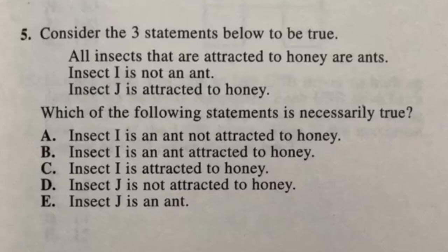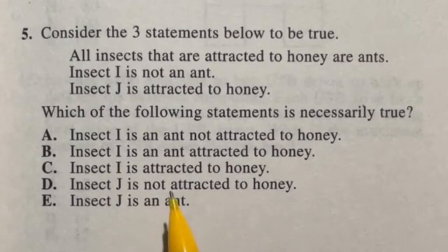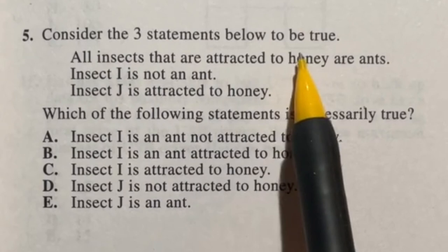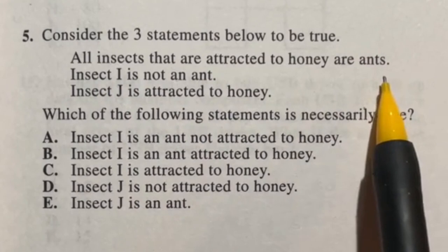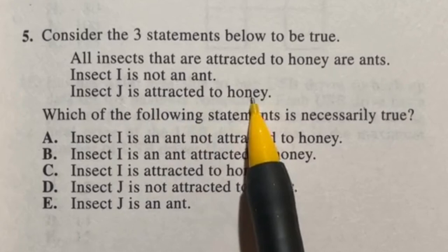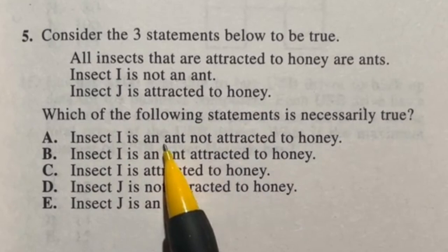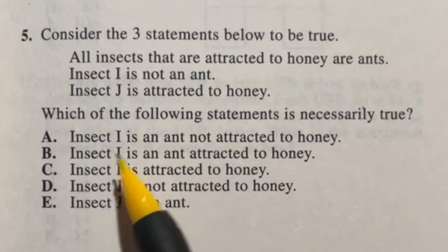Questions like this are just absolutely crazy. So it's just playing mind games with you. You just got to play by their rules and call it a day. So it says consider the 3 statements below to be true. So you don't get to decide if these are true or not. They are true. Accept them as true. They are your new life now. So all insects that are attracted to honey are ants. Insect I is not an ant. Insect J is attracted to honey. Okay. So which of the following statements is necessarily true? Insect I is an ant not attracted to honey. Now we're looking to see what's true here. Remember these are life. So it says insect I is an ant. False. Insect I is not an ant. We know this to be true. So A is out.